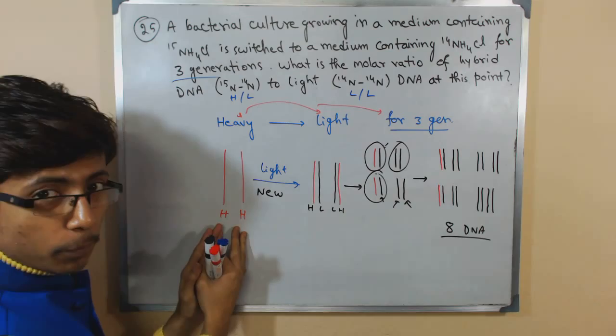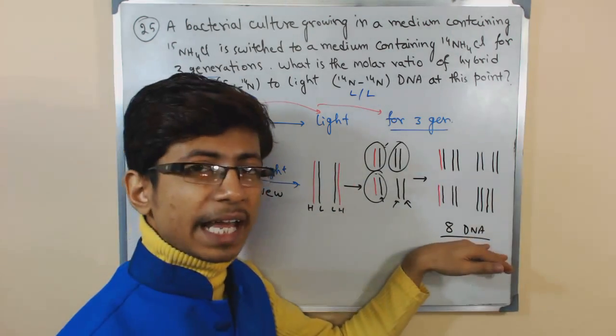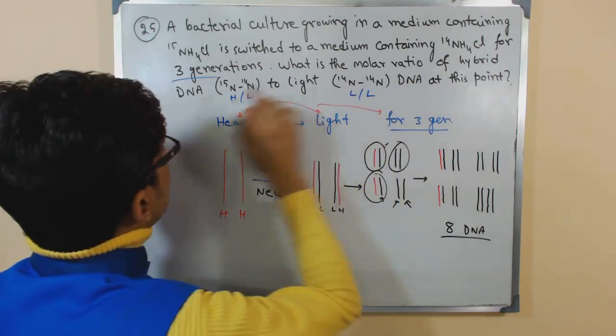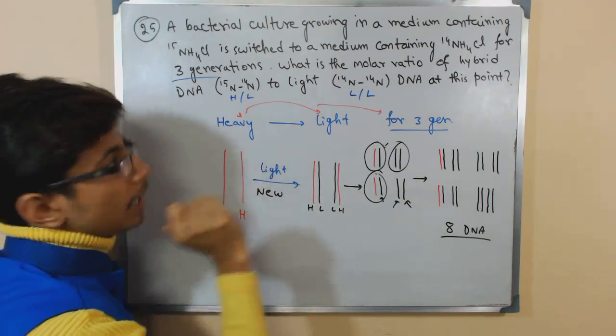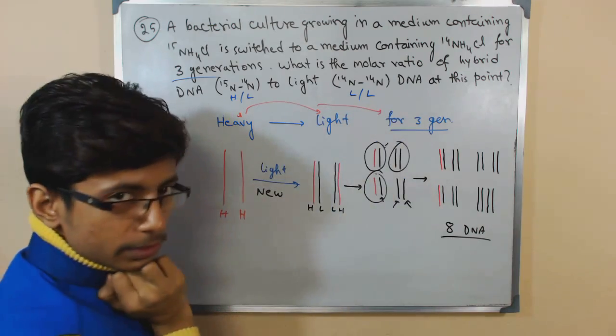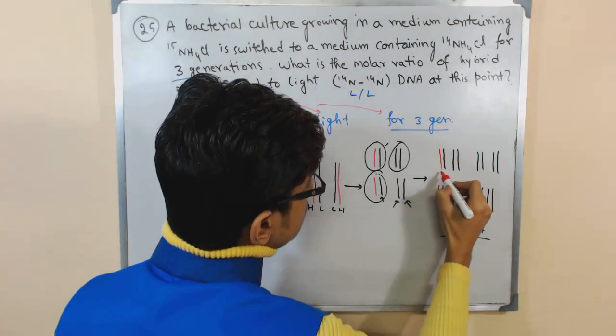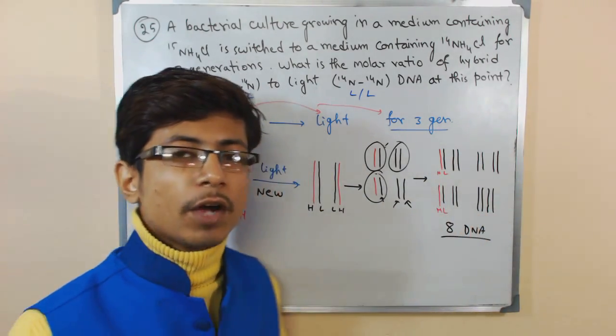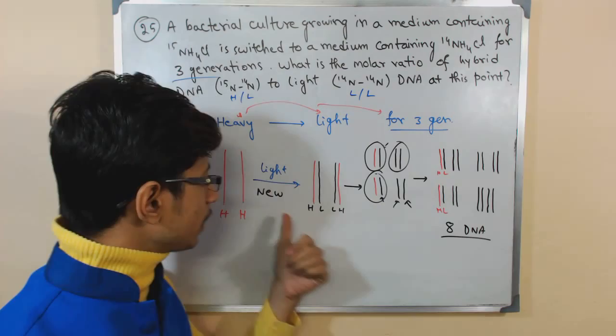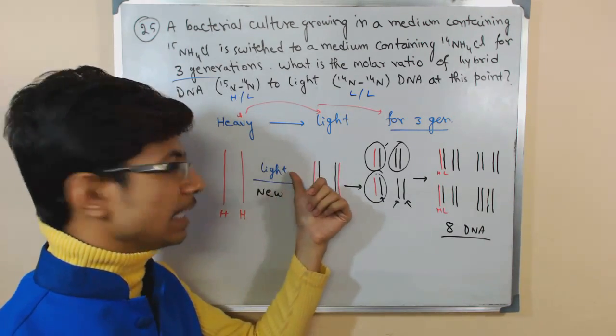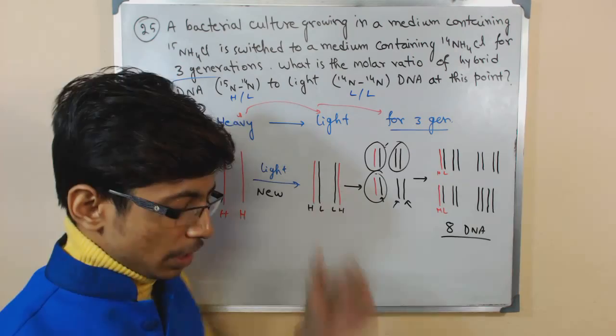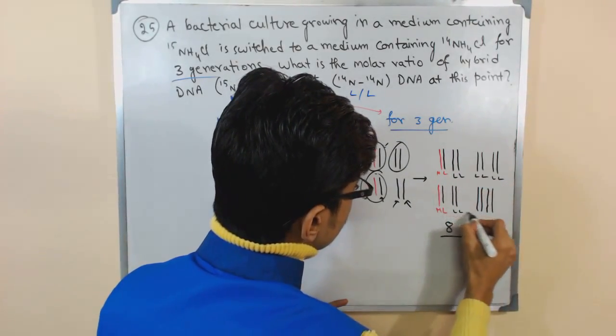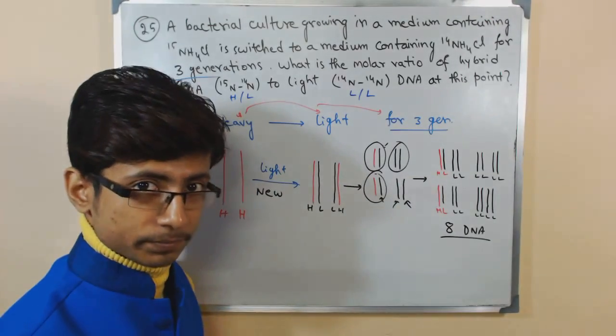So we started our journey with both strands heavy, we end up with something like that. Now the question is what is the molar ratio of hybrid DNA, that is heavy-light, to light-light? So here we go: this DNA heavy-light, heavy-light. Rest of them all are consisting of black-black, means they're in the light nitrogen containing media, they're light. So rest of them, all of them are light-light in nature.